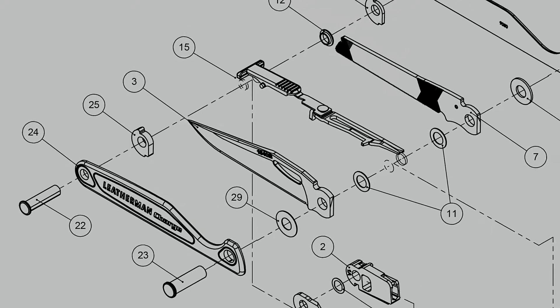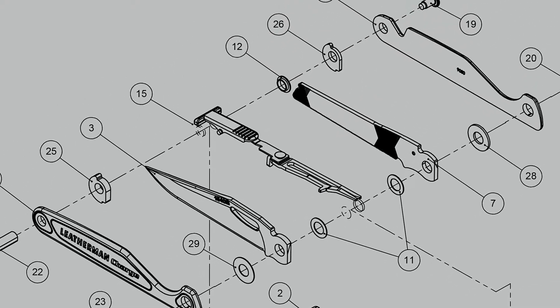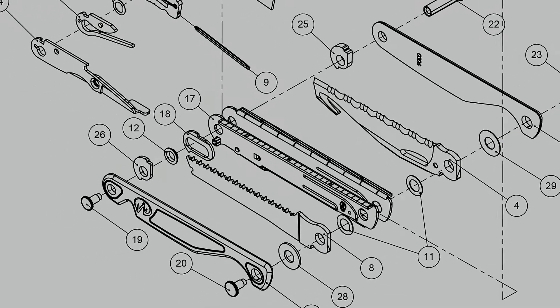The Charge has a S30V blade, the Charge Plus has a 154CM blade. The knives get the material because they will hold an edge longer, and what holding an edge longer means is you don't have to sharpen it as often.